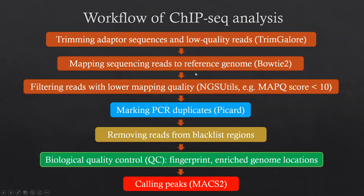The second step is we have to map sequence reads to the reference genome — we need to know where the sequence reads come from. We use Bowtie2 to map ChIP-seq sequencing reads. For sequences with low mapping qualities, we use a software called NGS-UTLS to filter those reads. If reads have a mapping quality score less than 10, we definitely don't want to use them.